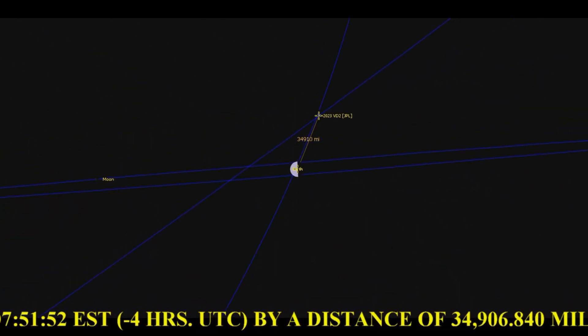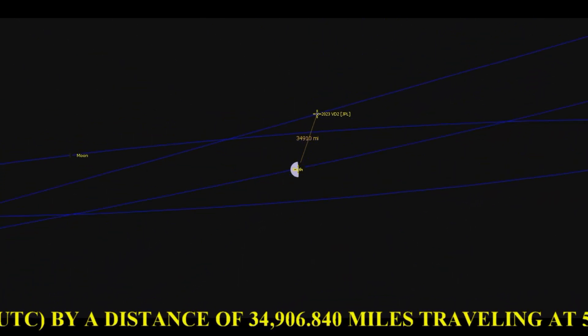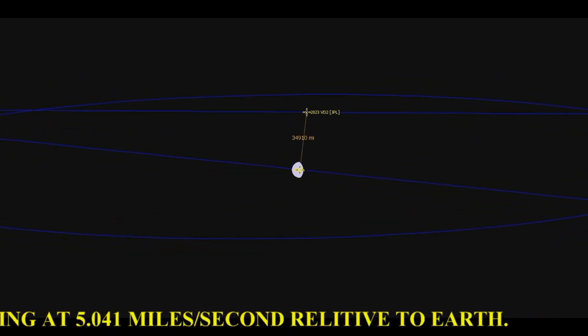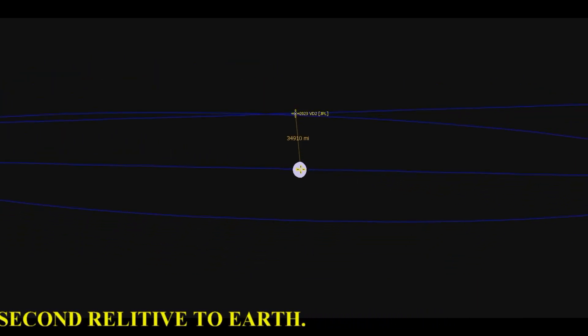The asteroid slipped past Earth's northern hemisphere on November 7, 2023, at 7:51:52 AM Eastern Standard Time (UTC-5).